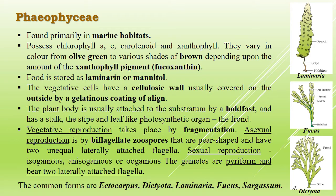Sexual reproduction may be isogamous, anisogamous, or oogamous. Fusion of gametes takes place in water, but in oogamous species gametes fuse in the oogonium. The oogonium is the female reproductive structure — usually a rounded cell or sac containing an egg cell or oosphere, which is non-motile and represents the female gamete. The gametes are also pyriform, pear-shaped, and bear two laterally attached flagella.